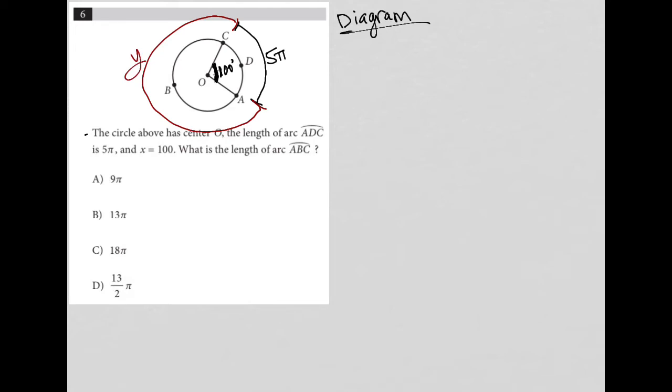What have I been given in the information portion of this question? I've been given a relationship between the arc measurement, which is 5π, and the central angle, which is 100 degrees.